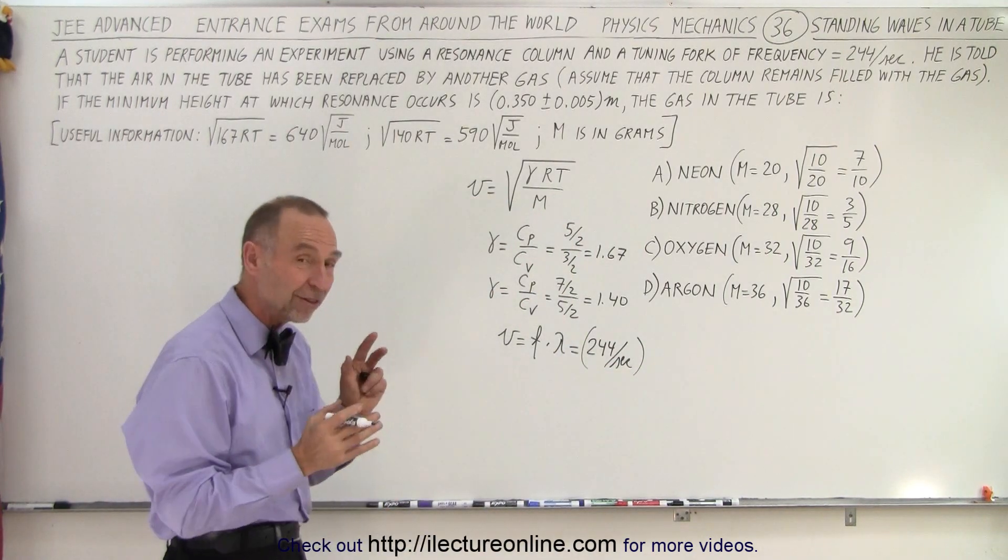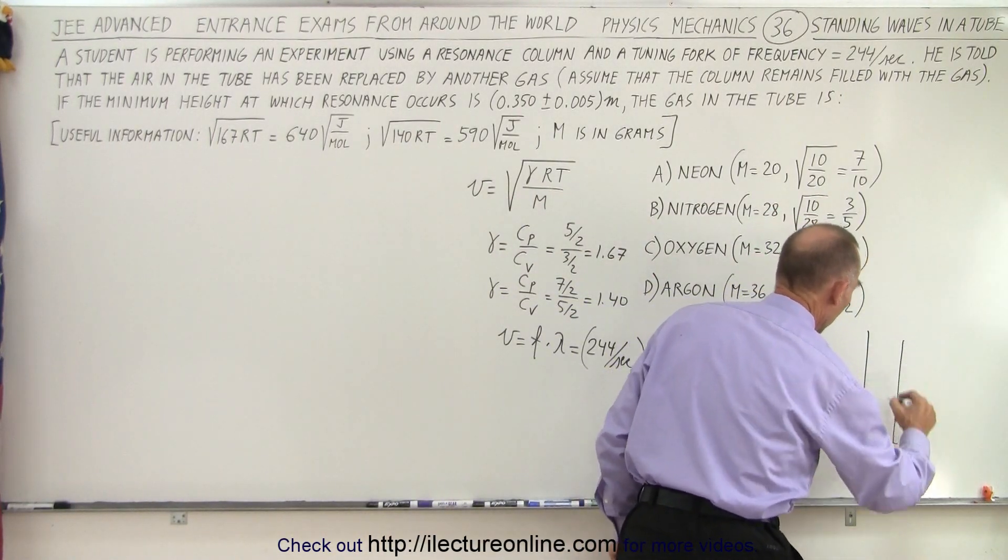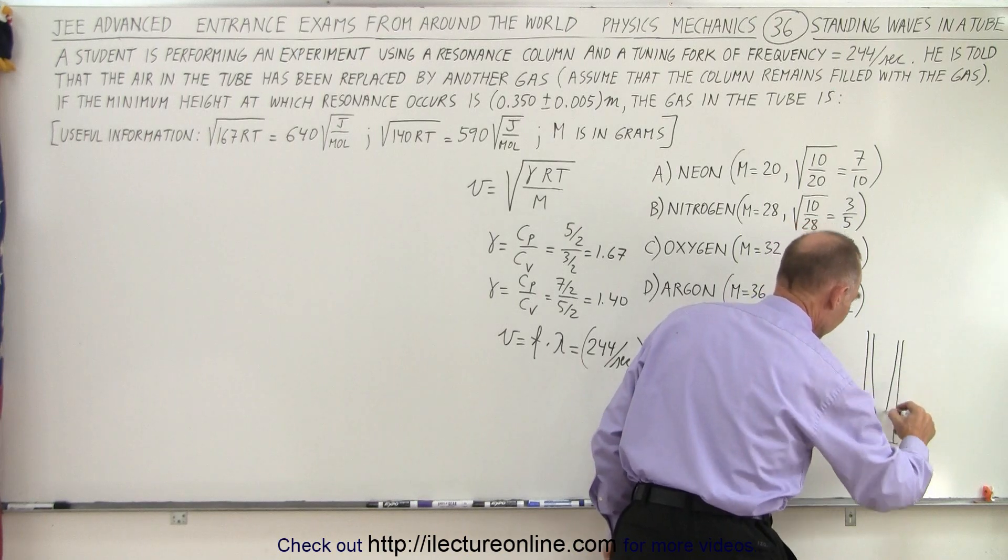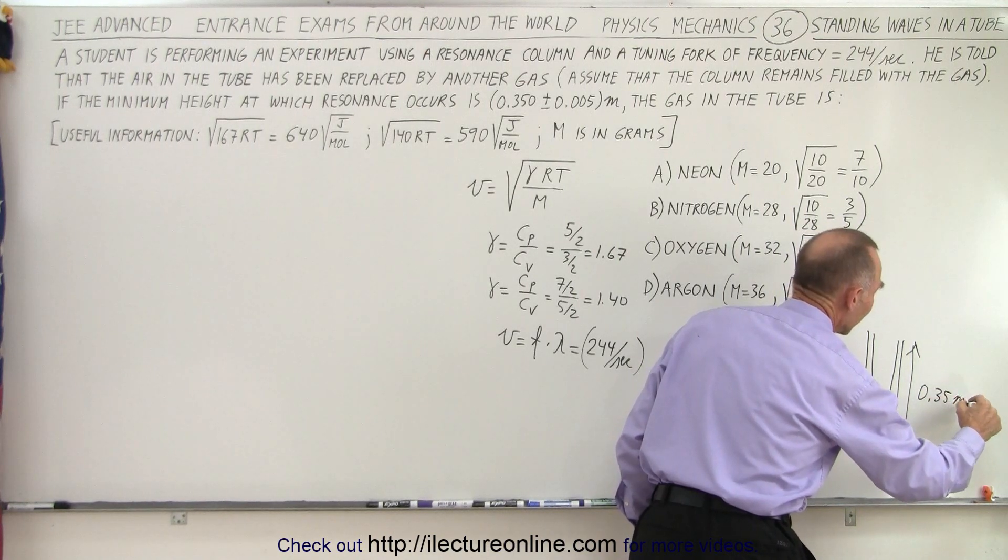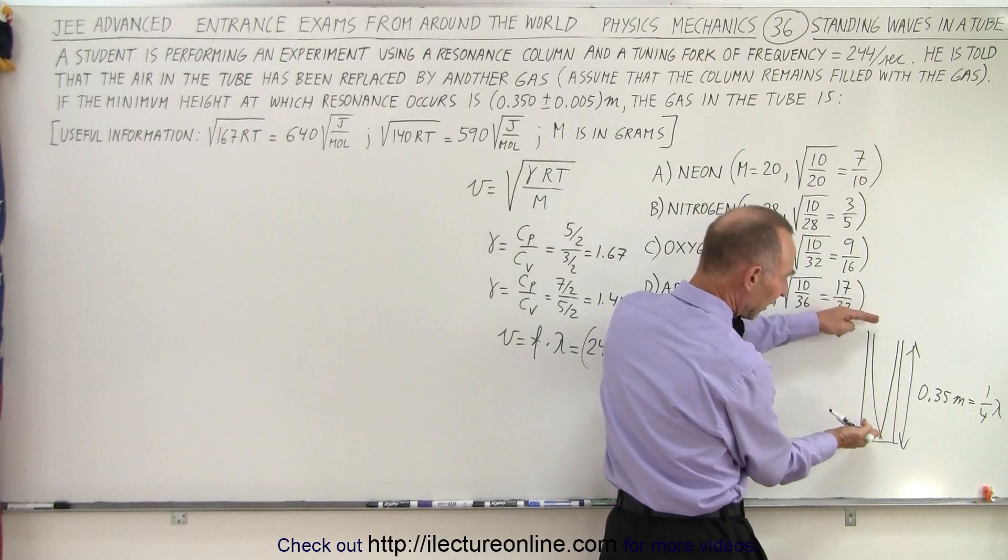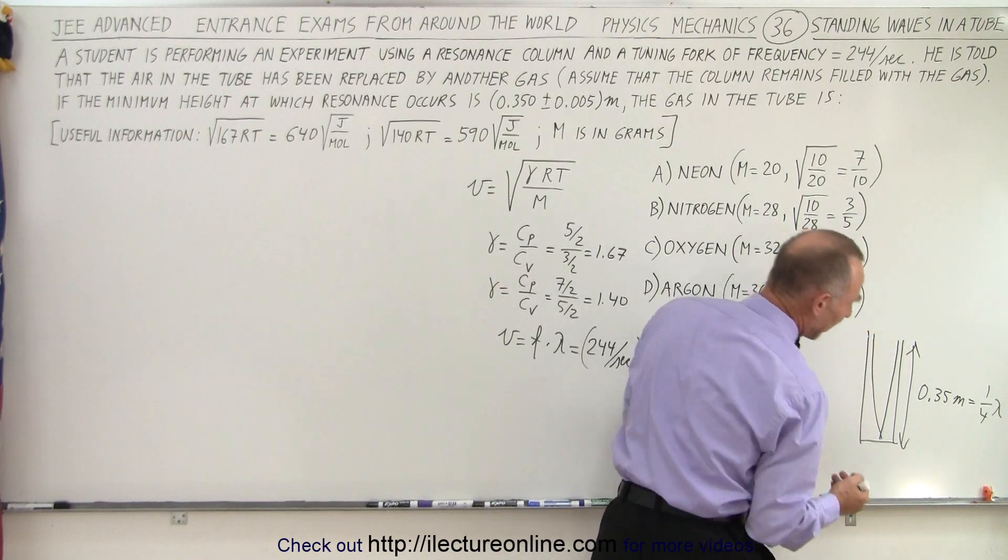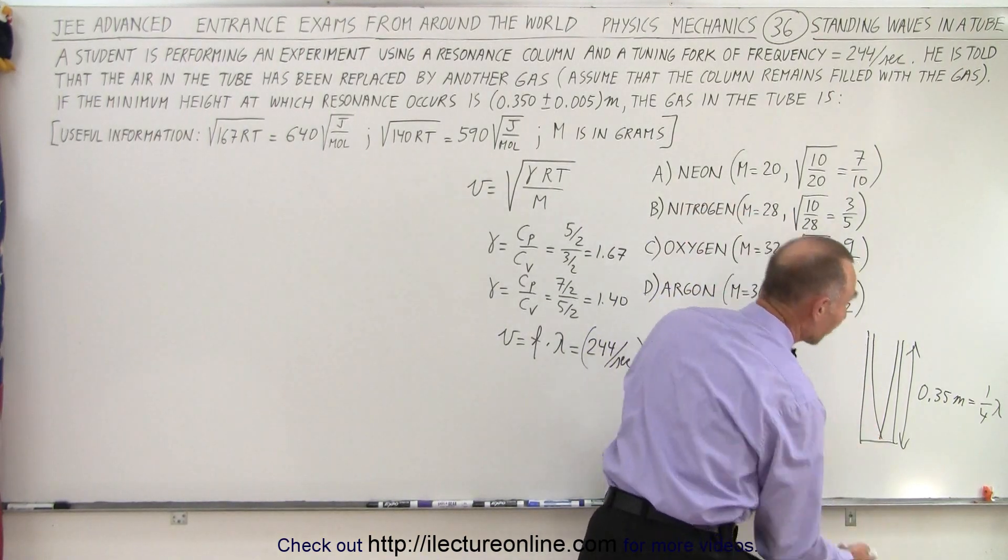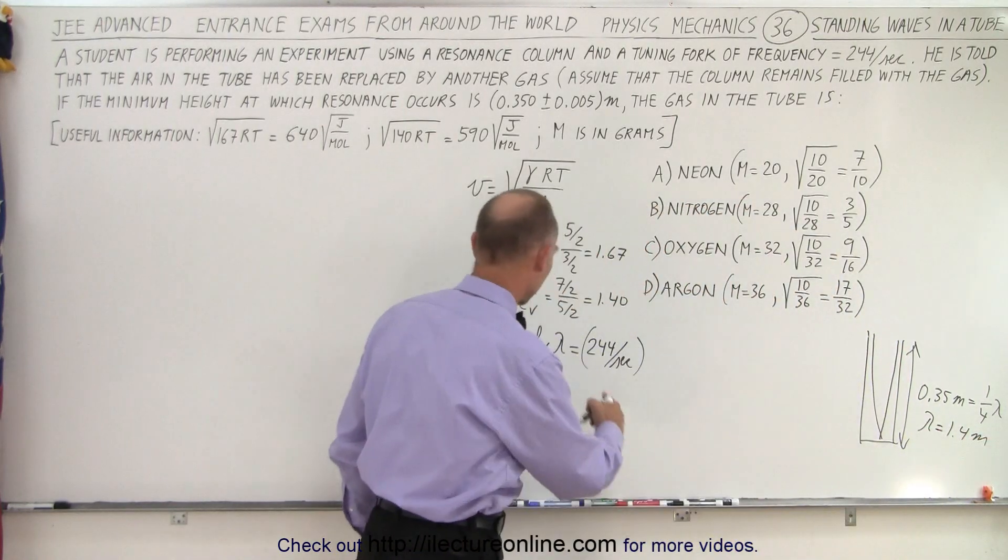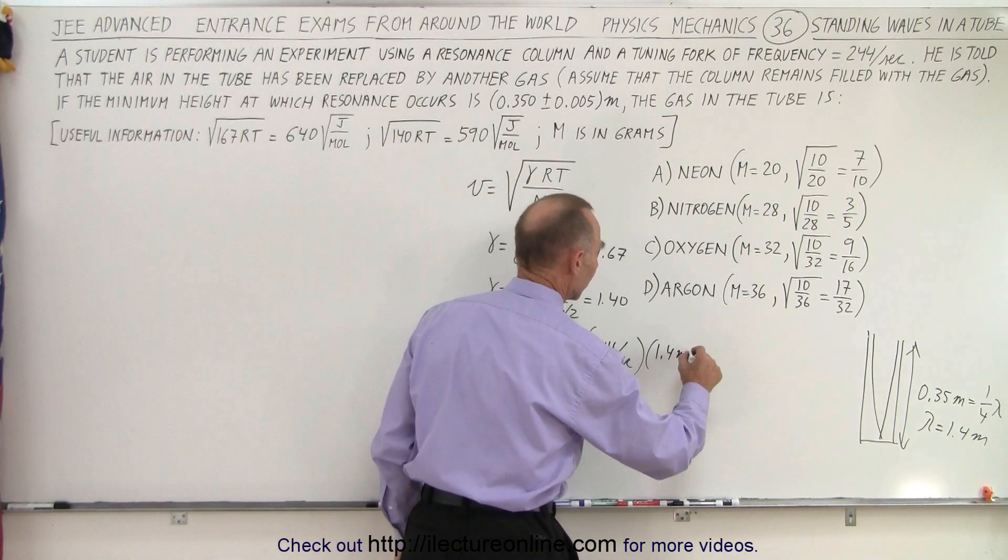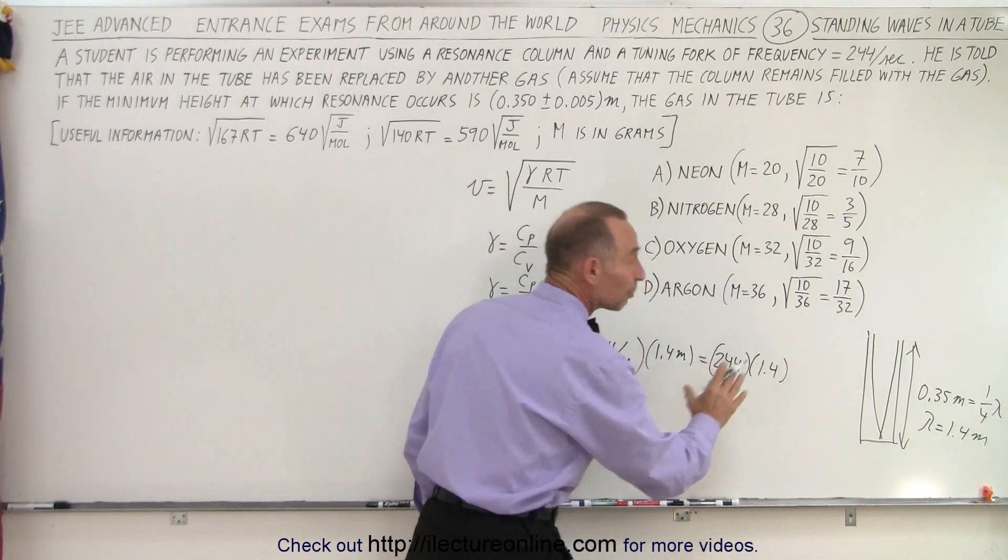They tell us that the minimum height for resonance frequency is 0.35 meters. And the minimum height in an air column would be obtained when the height, which is 0.35 meters, is equal to one quarter of a wavelength. That's the minimum height. That means that lambda equals 1.4 meters, which means when we plug that in we get 1.4 meters times 244 meters per second is the velocity.